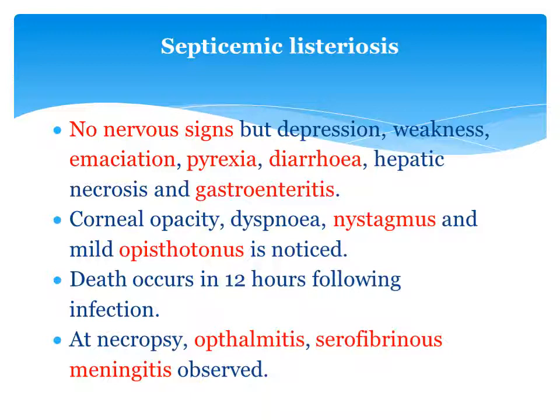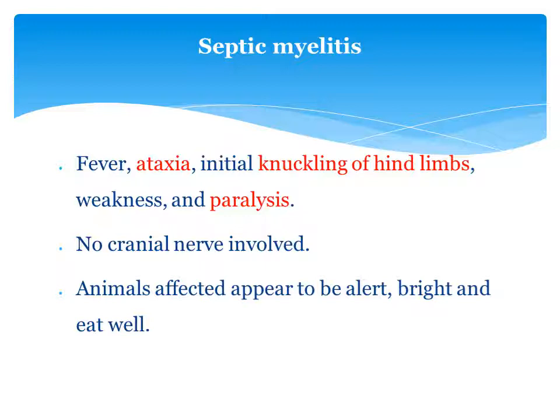At necropsy, ophthalmitis and serofibrinous meningitis are observed. Septic myelitis — inflammation of the spinal cord — also occurs. Because of the myelitis there is ataxia. Initially there is knuckling of the hind limbs, which progresses to weakness and finally to paralysis.